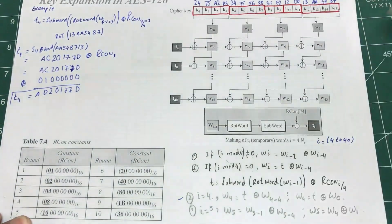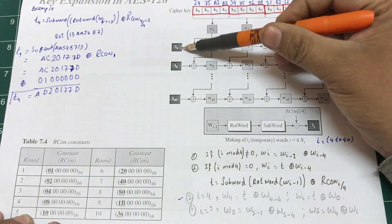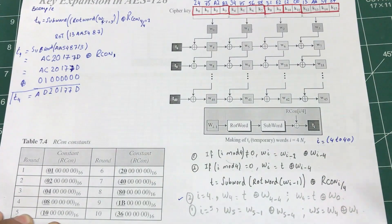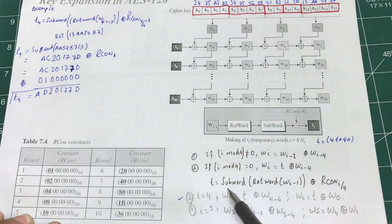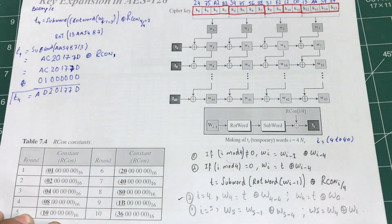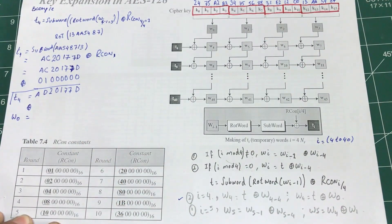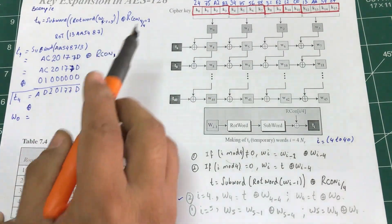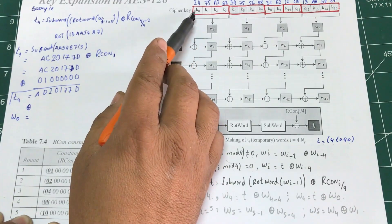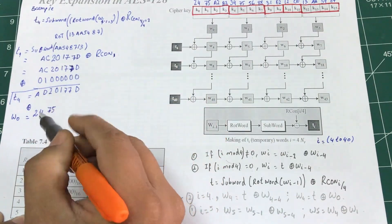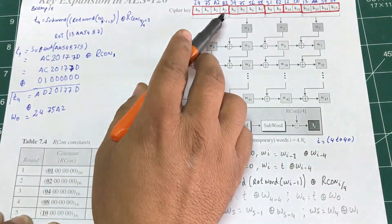So we're using this example — what we just calculated is the value of T4. Now we're going to XOR this T4 value with W0. W0 is this value here. So I bring in my T4 and XOR it with W0. W0 values starting from the most significant byte are 2475A2B3.